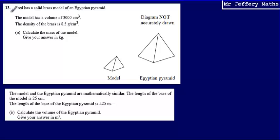This is question 13. Fred has a solid brass model of an Egyptian pyramid. The model has a volume of 3,000 centimetres cubed, and the density of the brass is 8.5 grams per centimetre cubed. In part A, we're asked to calculate the mass of the model.